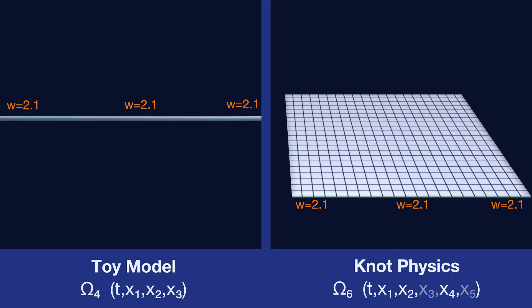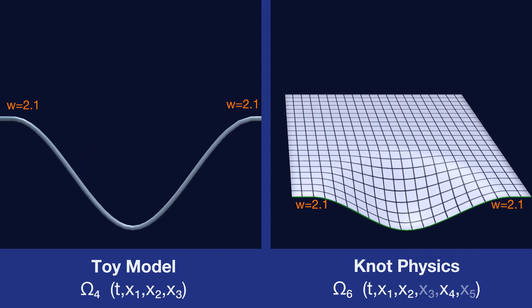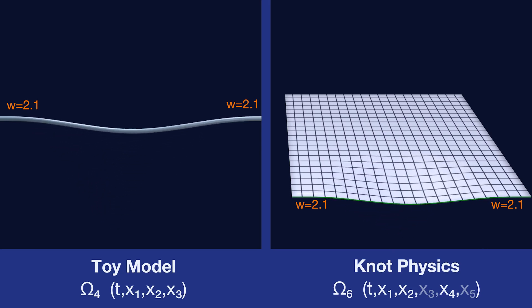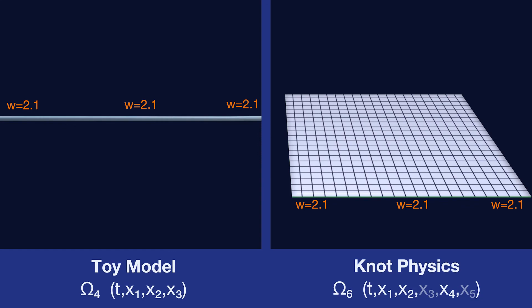We previously imposed the constraint that the branch weight can never be less than 1, and this implies that the manifold can only be stretched until the branch weight is equal to 1. And in this way we impose a limit on the stretching of the spacetime manifold.